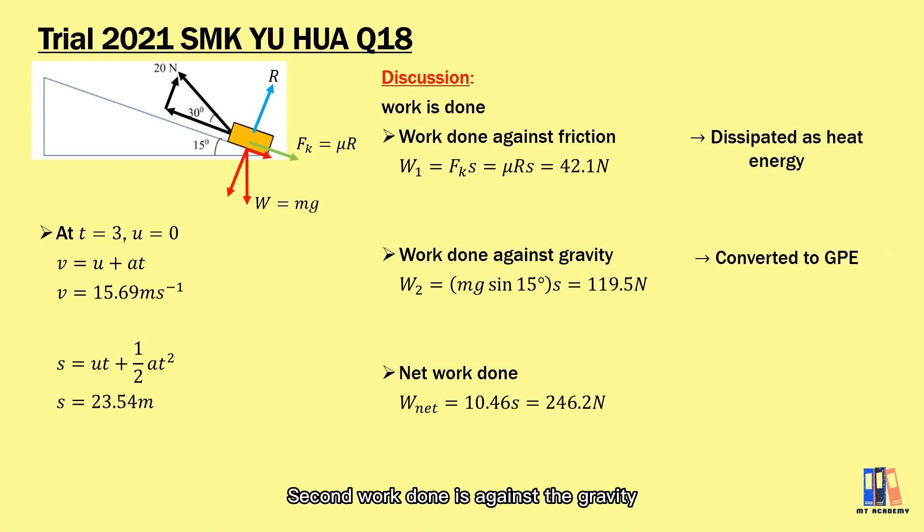Second work done is against the gravity. So there's increase in gravitational potential energy. Here you can apply the formula W = mgh. We can obtain the height of the object from the initial position is 6.09 meter.